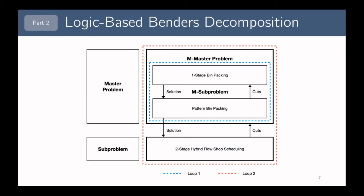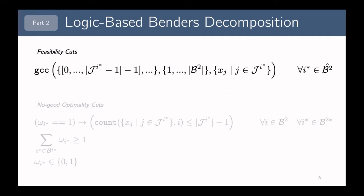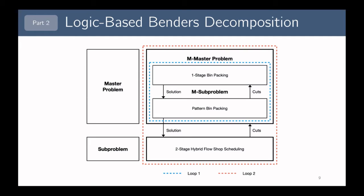The problem is that we can oftentimes not find a feasible partitioning. If we can't solve to feasibility, we need to add feasibility cuts for each infeasible autoclave batch. These cuts take the form of a CP global constraint called the GCC constraint, which prevents the set of jobs in an infeasible batch from appearing again in any autoclave batch of subsequent solutions. If we do find a feasible partitioning, we exit loop one and move to the sub-problem, where we schedule all batches in a two-stage hybrid flow shop scheduling problem.